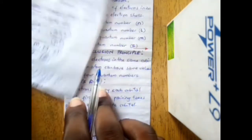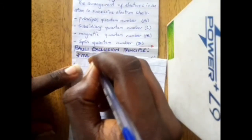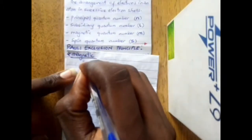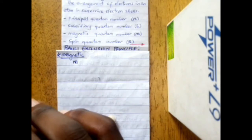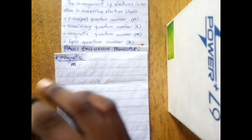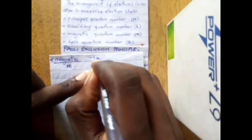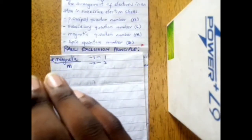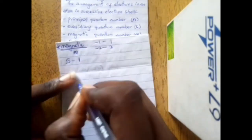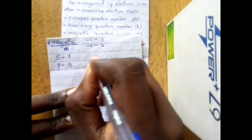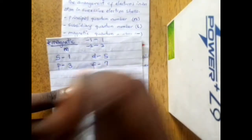The magnetic quantum number, designated ml, tells us the number of orbitals in each sub-level. Its values range from negative l to positive l. In summary: the s orbital has one sub-shell, the p orbital has three sub-shells, the d orbital has five sub-shells, and the f orbital has seven sub-shells.